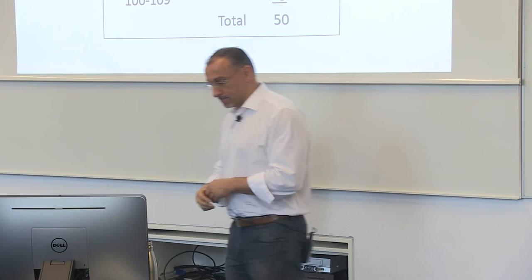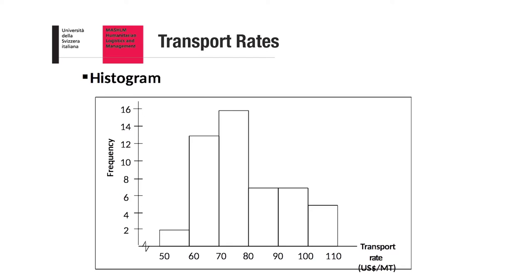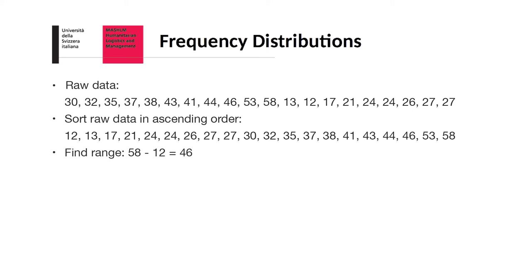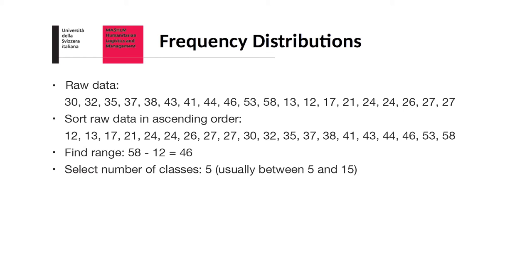Now, if you are given some data, random data, here's the raw data. Well, the first thing that you would do is basically sort it out. 46 is the range, so it goes from 12 to 58. Now you can select how many classes. You know, possibly you could say 5 classes or you could even say 10 in a range of 5. So there we go. So we select 5.